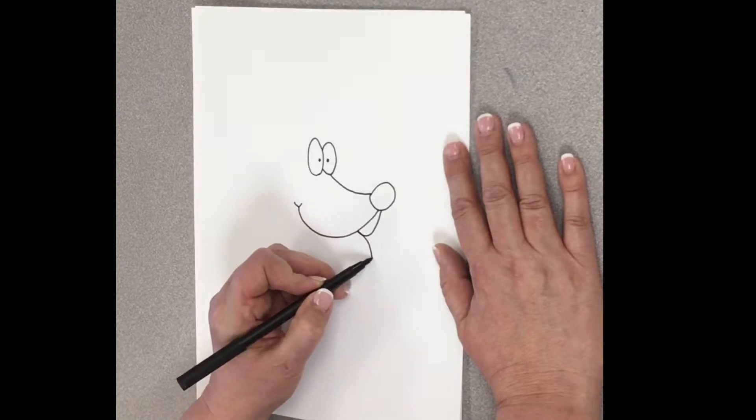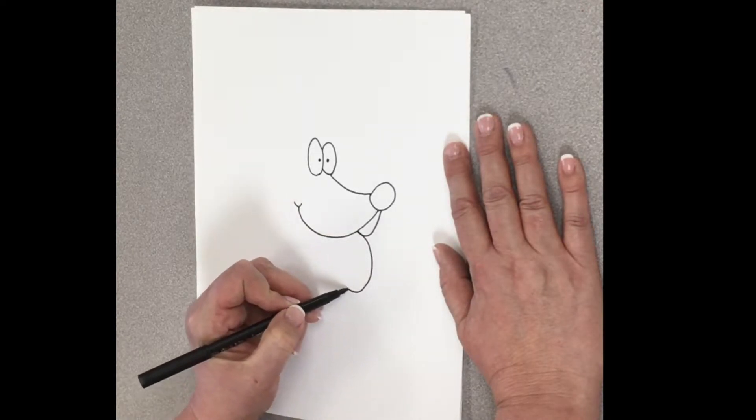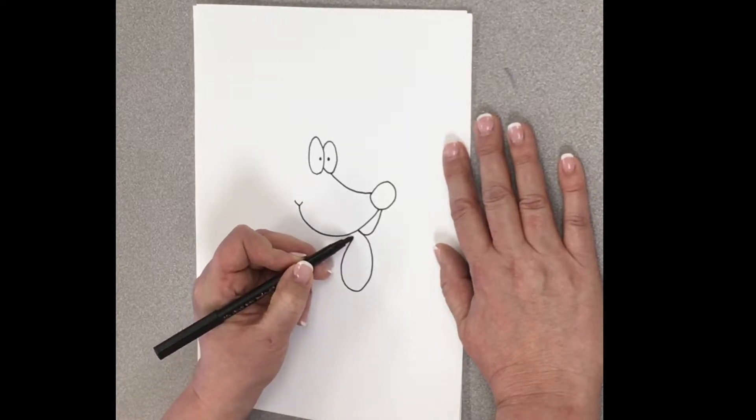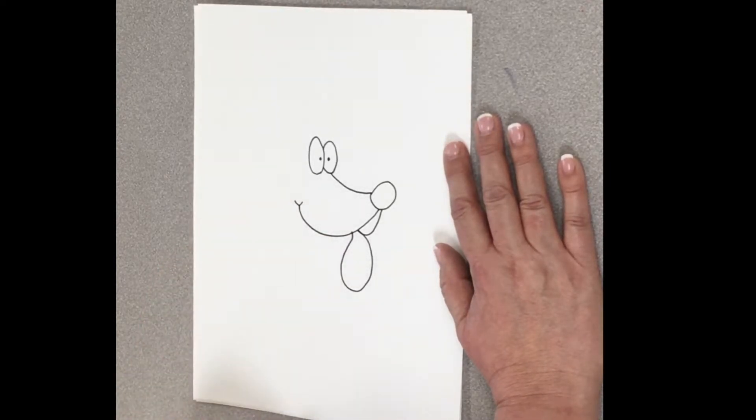And then I'm going to draw his tongue. And it's just going to be a big old wet dog tongue that loves to kiss people. Kind of looks like a raindrop.